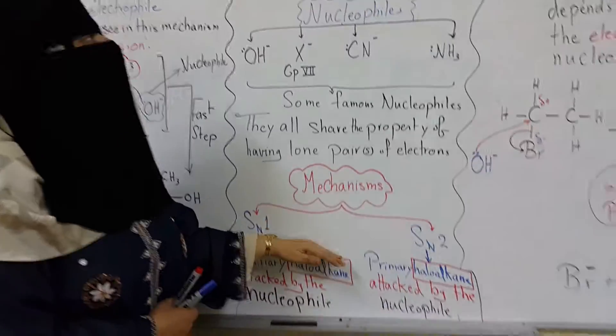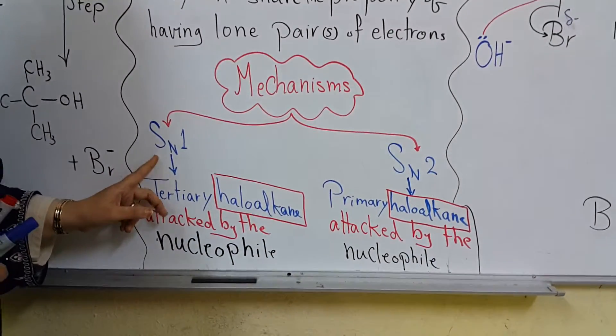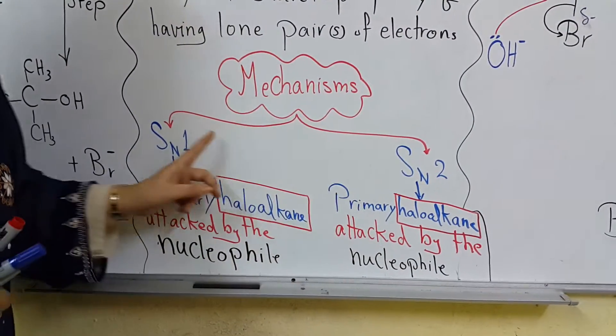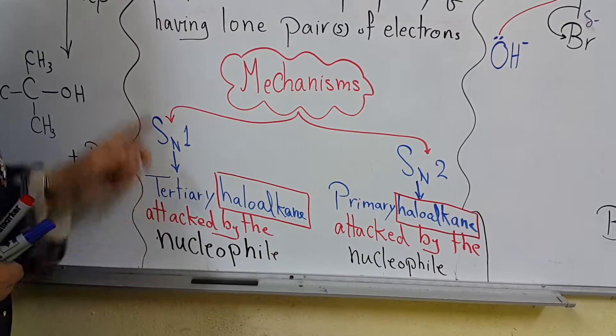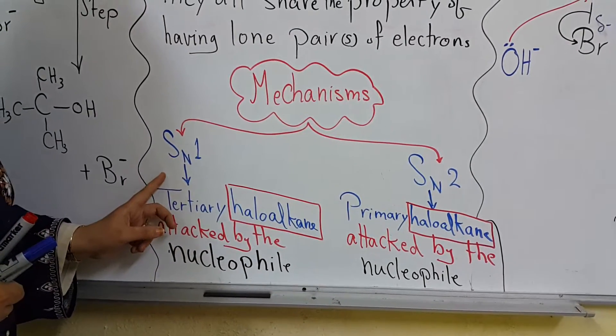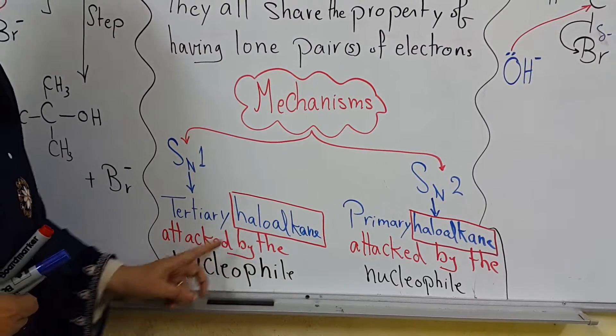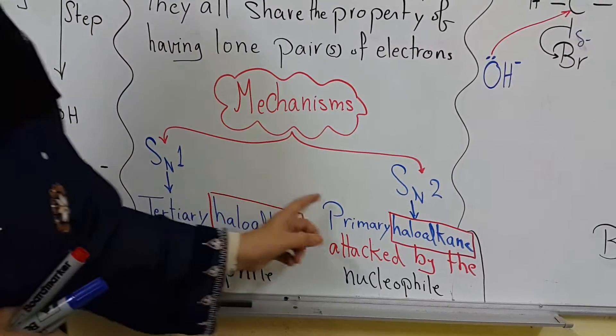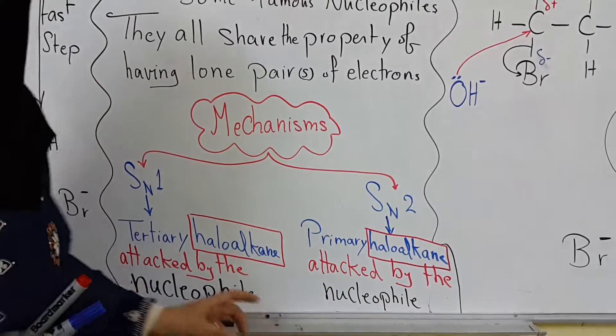Mechanisms for nucleophilic substitution are classified into two types: SN1 and SN2. I'm going to explain these reactions for haloalkanes. SN1 mechanism happens for tertiary haloalkanes, and SN2 for primary haloalkanes, both attacked by nucleophiles. Let's go to the SN1 mechanism.